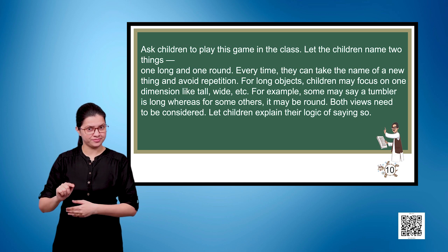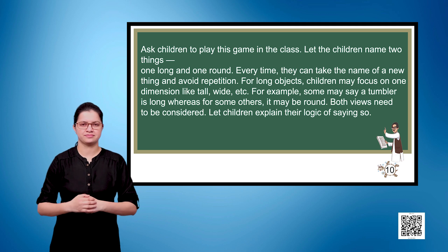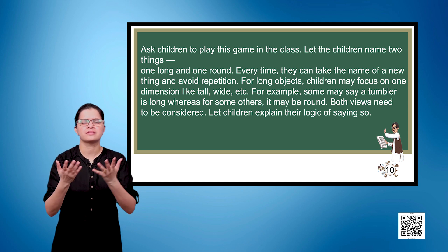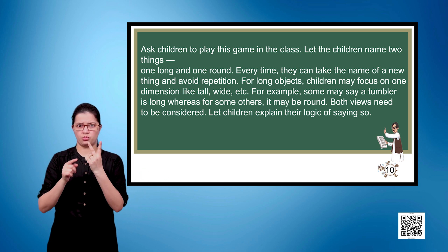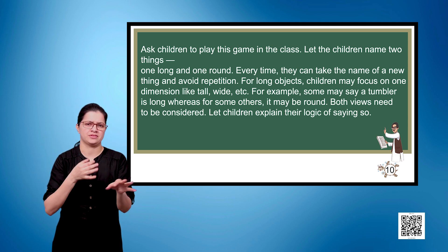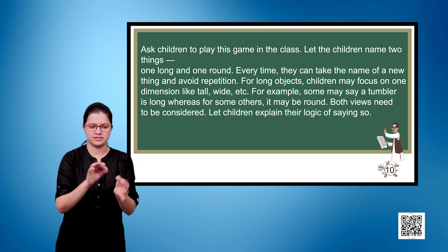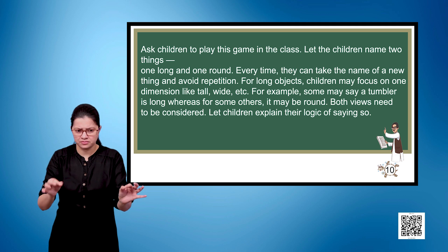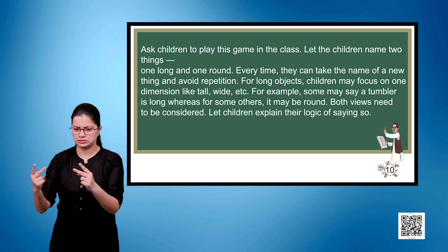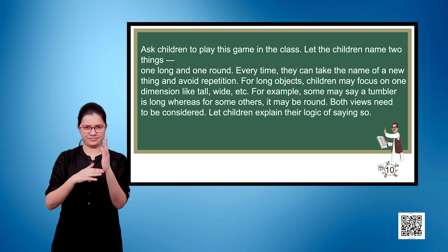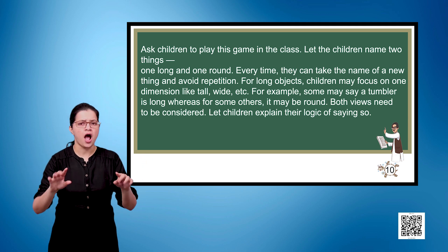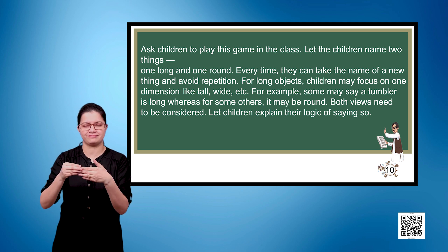Page number 10. Ask children to play this game in class. Let children name two things — one long and one round — every time taking the name of a new thing and avoiding repetition. For long objects, children may focus on one dimension like tall, wide, etc. For example, some may say a tumbler is long, whereas for others it may be round. Both views need to be considered. Let children explain their logic.